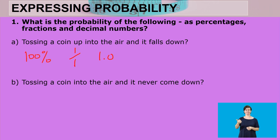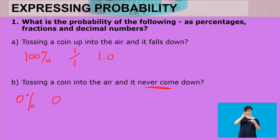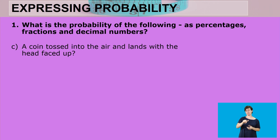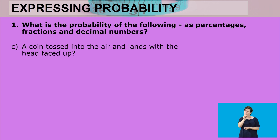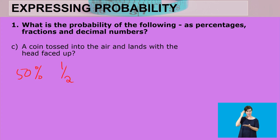Tossing a coin into the air and it never comes down — that will never happen. Whenever we throw something up it must definitely come down, so the chance of it not coming down is impossible. As a percentage it is 0%, as a fraction it is 0, and as a decimal it is 0. For a coin tossed and landing with the head faced up: since there's only a head and a tail, there's a 50% chance it lands on heads, which is 1 over 2, or 0.5.